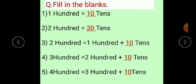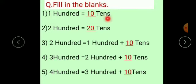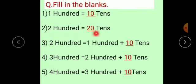So, here are some fill in the blanks based on this. First question: 100 is equal to how many tens? 100 is equal to 10 tens. Second: 200 is equal to how many tens? Since 100 equals 10 tens, 200 means 2 into 10, which is 20 tens.